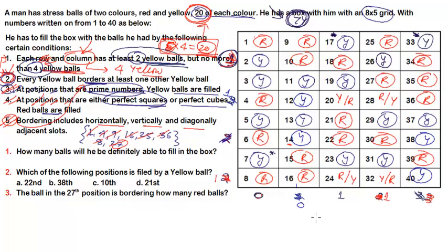Now let's move to the questions. Question 1 asks: how many balls will he definitely be able to fill? Out of 40, only slots 20, 24, 28, and 32 are uncertain. All other 36 positions are determined. So the answer is 40 minus 4, which is 36.